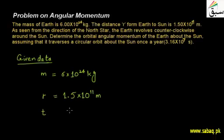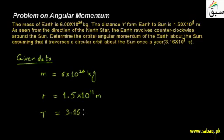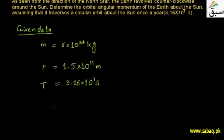The time period T = 3.16 × 10⁷ seconds, which represents one year. We are going to calculate the orbital angular momentum, which we represent with L-naught.